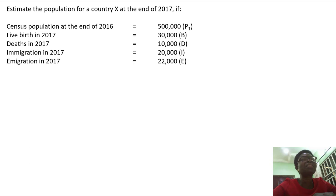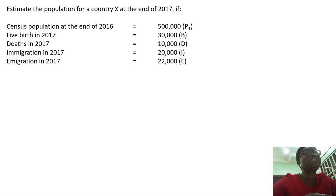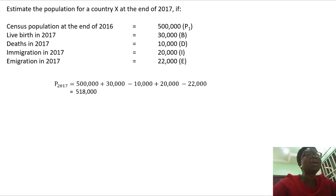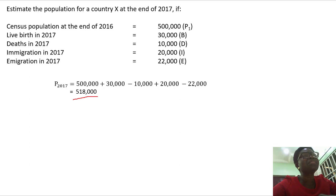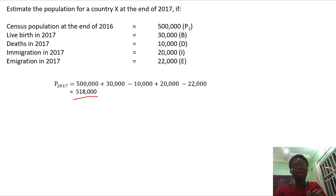Let's look at an example. Estimate the population of Country X at the end of 2017. The census population at the end of 2016 was 500,000. Births, deaths, immigration, and emigration figures are given. Substituting into the formula: 500,000 + 30,000 − 10,000 + 20,000 − 22,000 gives an updated population of 518,000. This shows how demography is vital for educational planning.